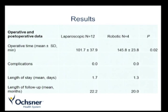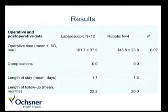In terms of results, the main difference we found was in operative time. Mean operative time for the laparoscopic group was 101 minutes, and for the robotic group was 145 minutes. There were no complications, conversions, or deaths in either group. Length of stay was comparable between the two groups — 12 out of 16 patients stayed only one day after surgery — and length of follow-up was also comparable.